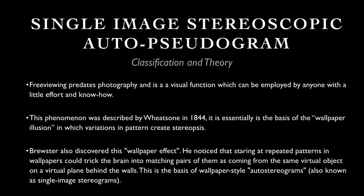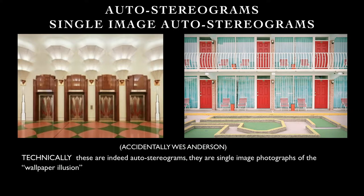This is the basis of autostereograms and also single image autostereograms — they're kind of synonymous. This is the opposite of what an autostereogram would be, only in the sense that when you view those images they have to be viewed in parallel, and that's really the crux of the argument. You could find wallpaper effects anywhere — just Google 'accidentally Wes Anderson' and you get a lot of repeating patterns. These are autostereograms, but to classify them as autostereograms I probably wouldn't, because they weren't made with intent, and that has a lot to do with it.